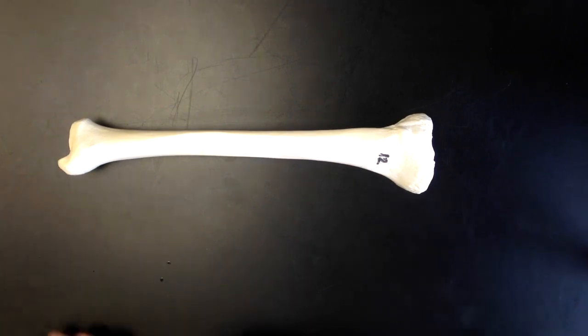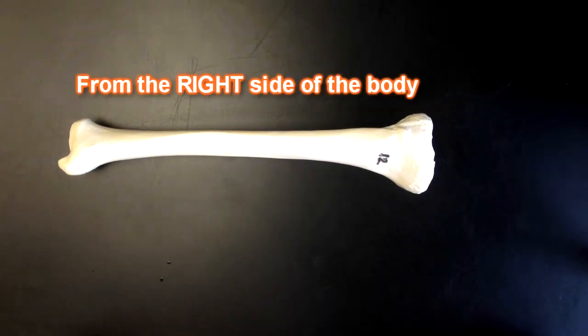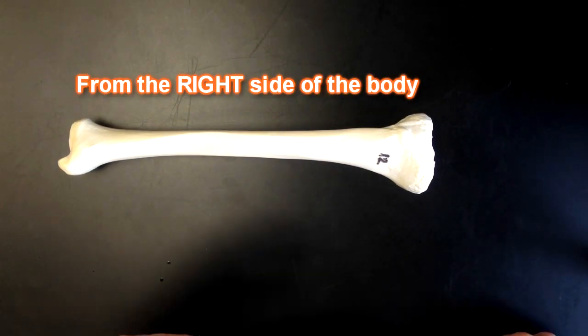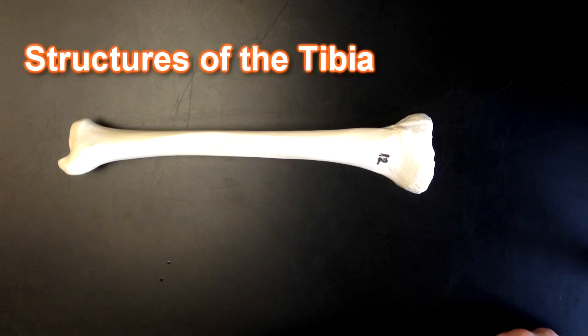Right now we're dealing with a tibia that is from the right side of a human body. Let's run through some of the structures of the tibia.